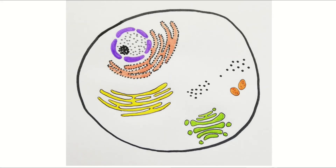Here are some more ribosomes. These ones are free in the cytoplasm. Free ribosomes like these make proteins, usually for use by the cell itself. The ribosomes on the endoplasmic reticulum tend to make proteins for release from the cell. Ribosomes are made of protein and RNA, and they are the only organelles that aren't covered by a membrane.